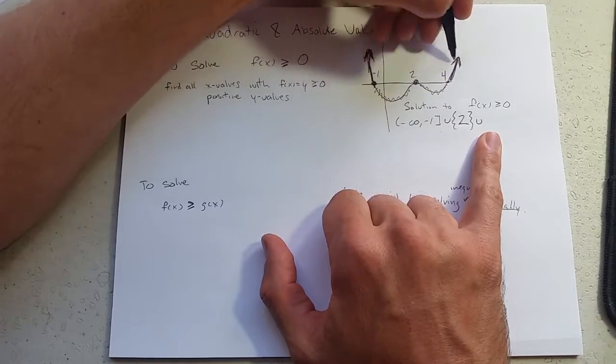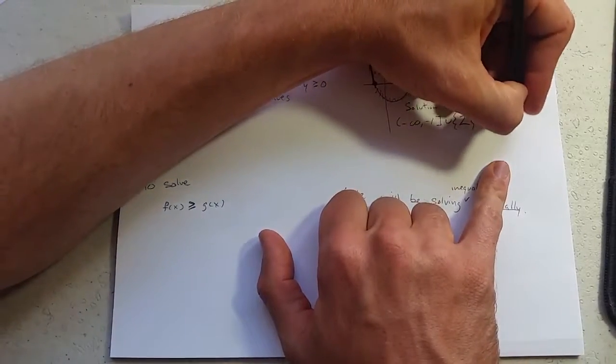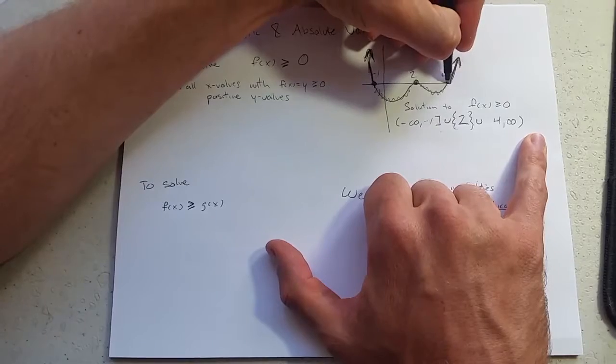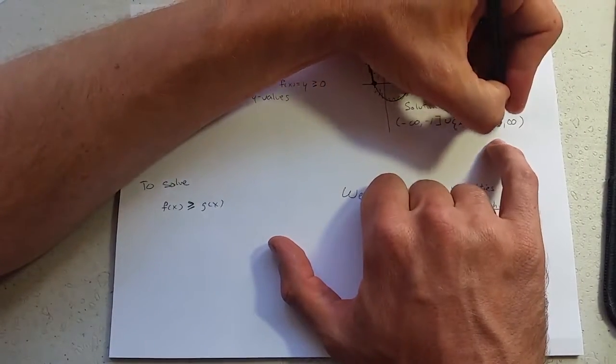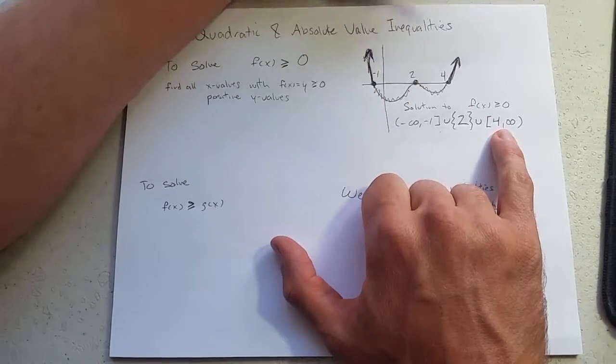Well, we're going to start at 4 and go to infinity. Always open at infinity. It's okay to equal 4 because our y value is equal to 0. Right there. So when x is 4, y is 0, and that's just fine.